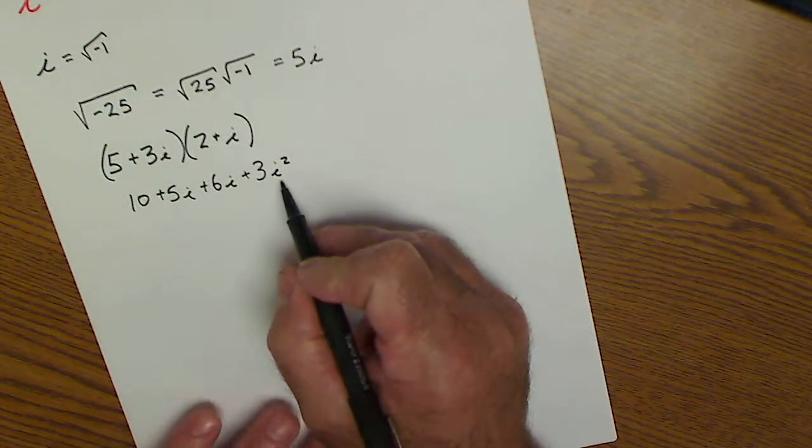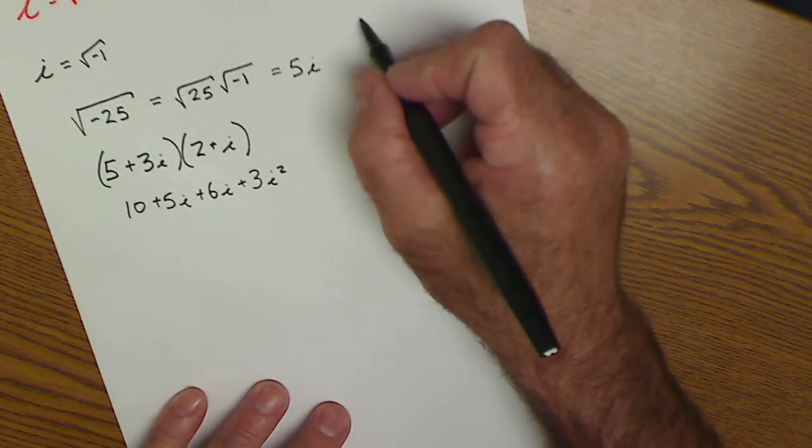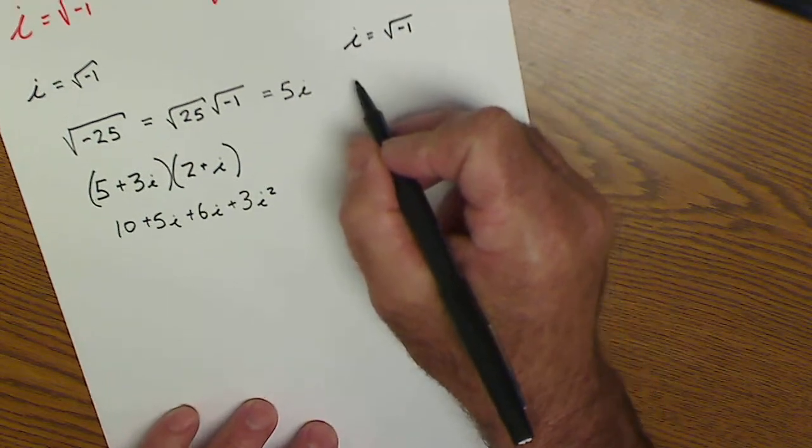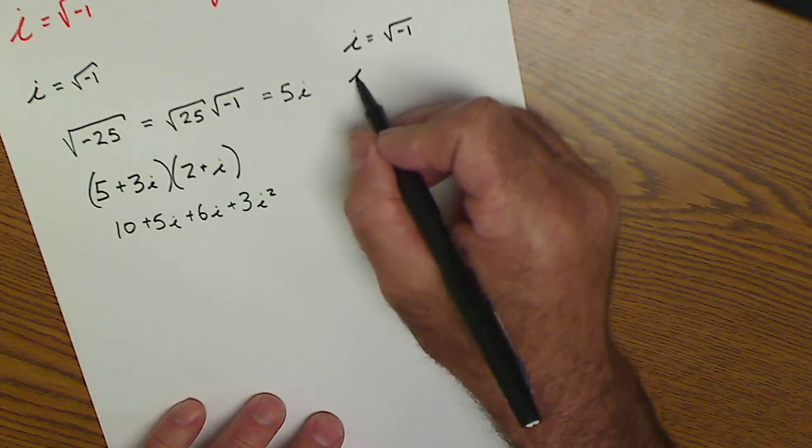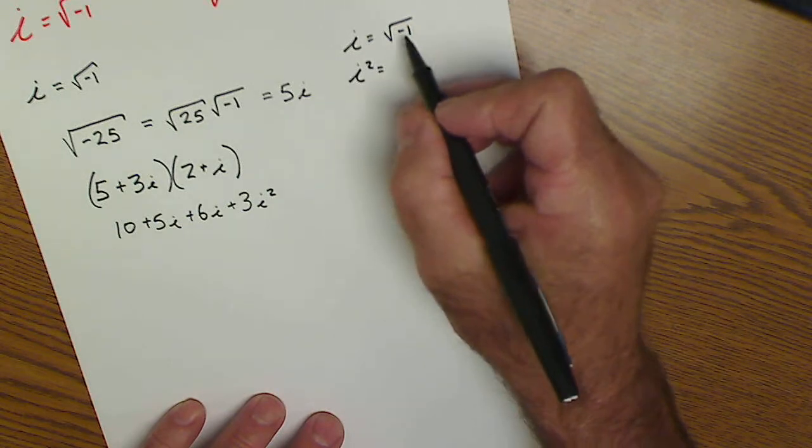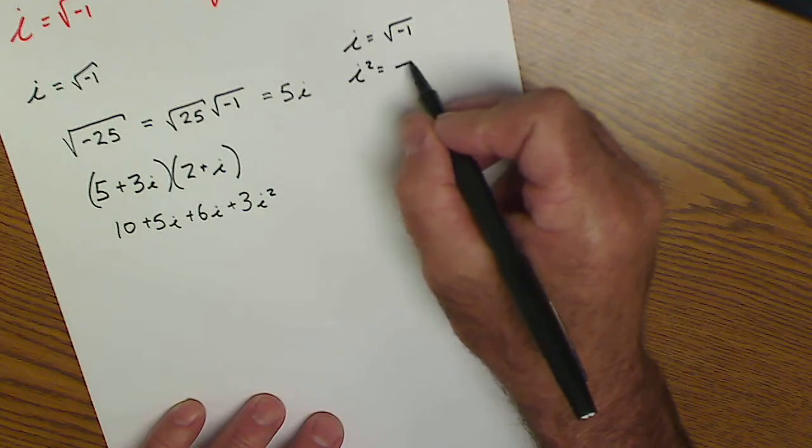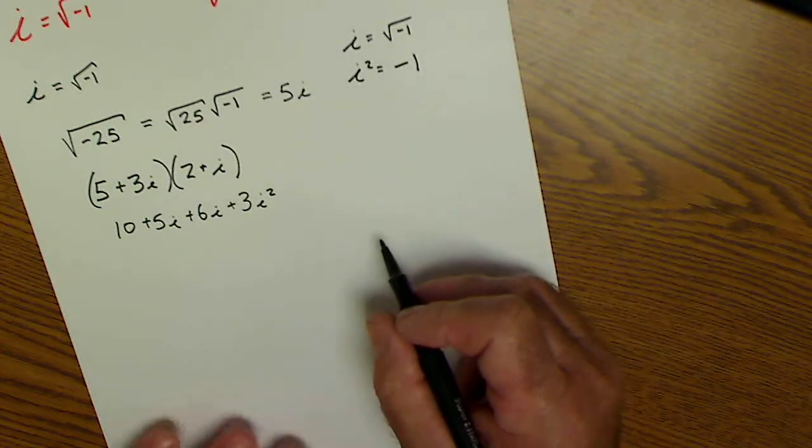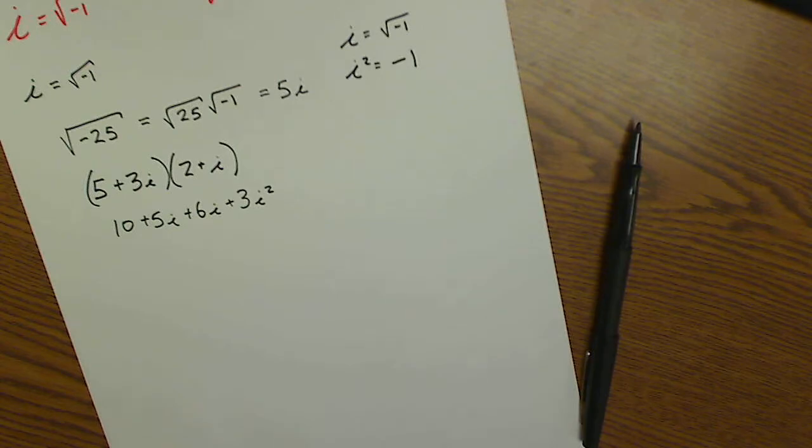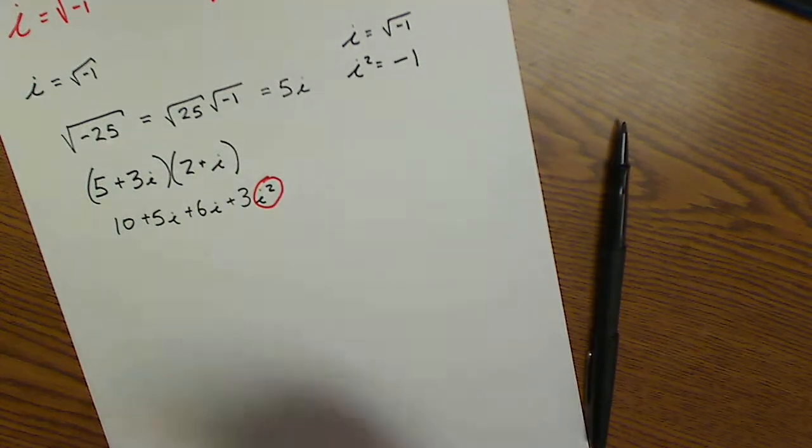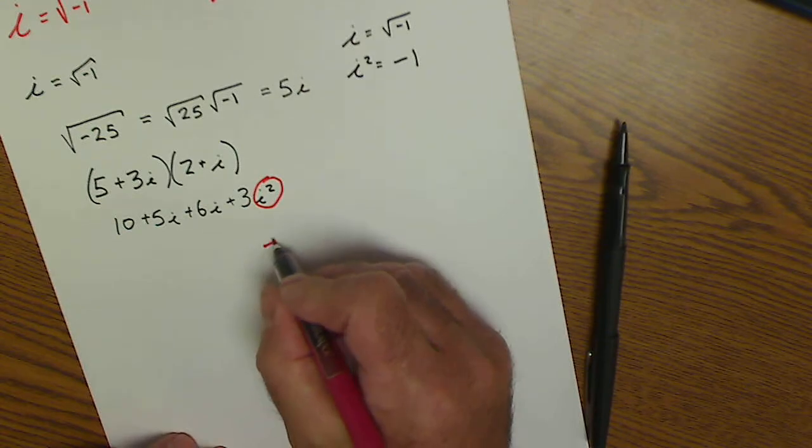i squared, so let's see i is equal to the square root of negative 1. i squared would be this thing squared, so the square and square root would cancel themselves, so i squared is equal to negative 1. So I have i squared equals negative 1. I could replace that i squared there with a negative 1.